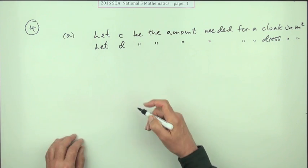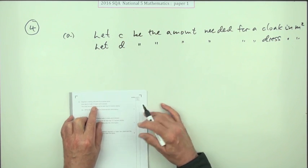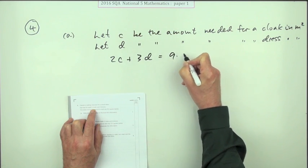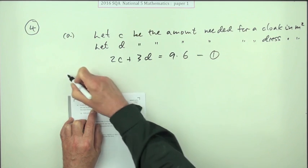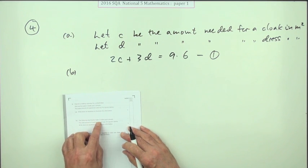Right, so first thing: write down some information to illustrate this. Two cloaks and three dresses, 9.6. So 2c plus 3d equals 9.6, there's my first equation. The following day, Charlie made three cloaks and four dresses, and that used 13.3 square meters.